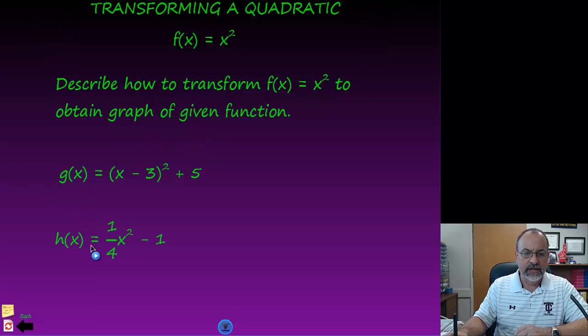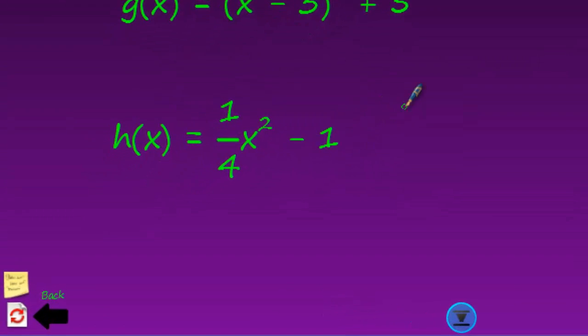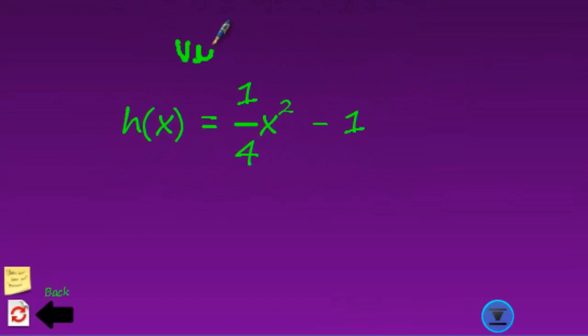So let's take a look at the next one. Here we have 1 fourth x squared minus 1. So what's happening here? Well, remember, a number in front of the x squared is a vertical stretch or shrink. So this is a vertical. And because this value is between 0 and 1, it's a vertical shrink.